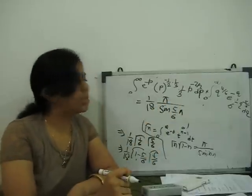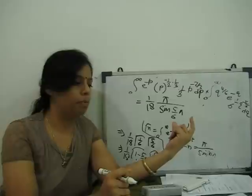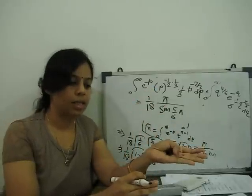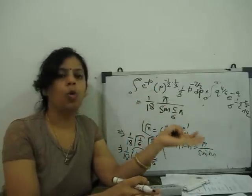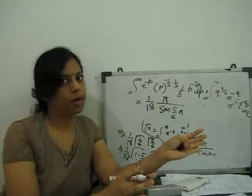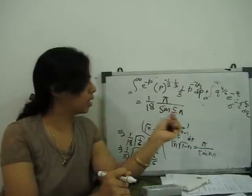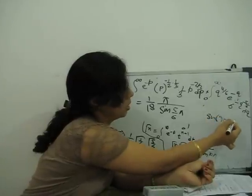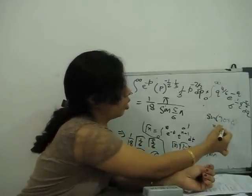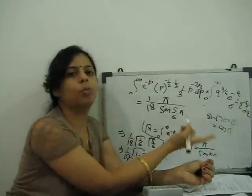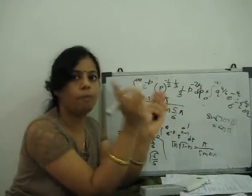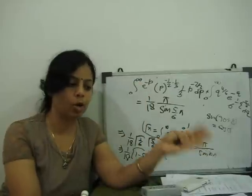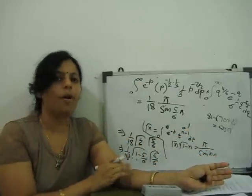Sine 5 by 6 pi can be broken into sine of pi by 2 plus pi by 3. Sine of 90 degrees plus theta gives cos theta. So pi by 2 plus pi by 3 gives cos of pi by 3, which is cos 60 degrees, equals 1 by 2.